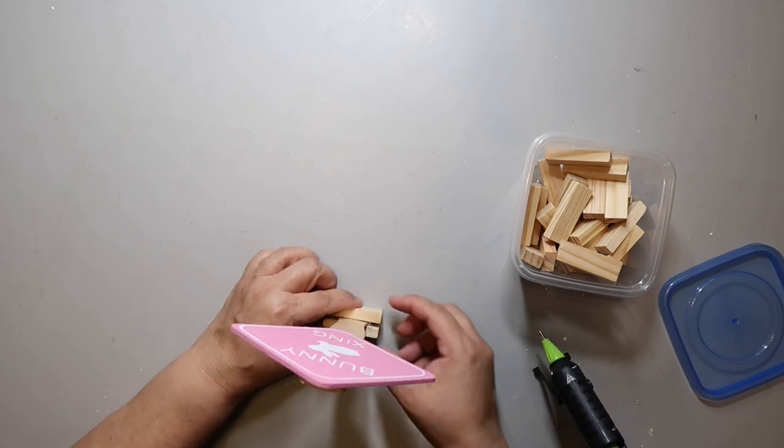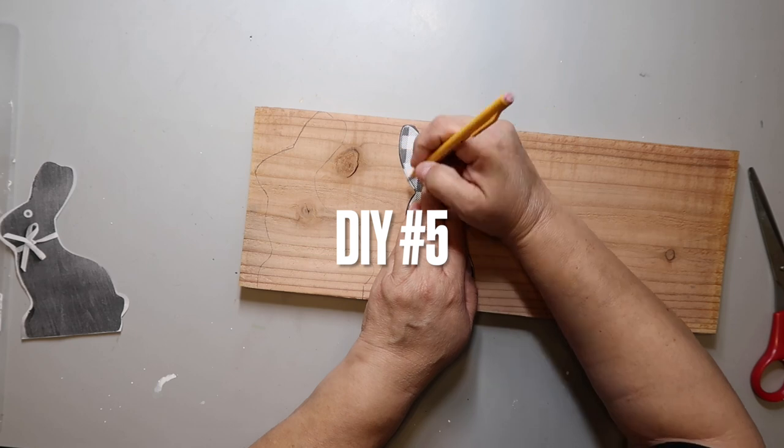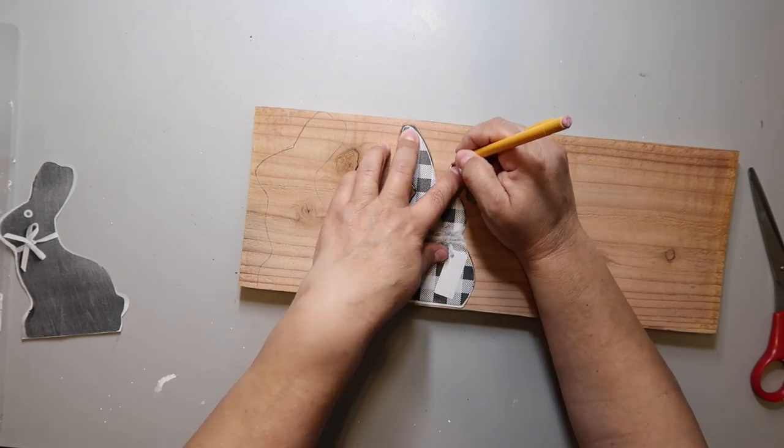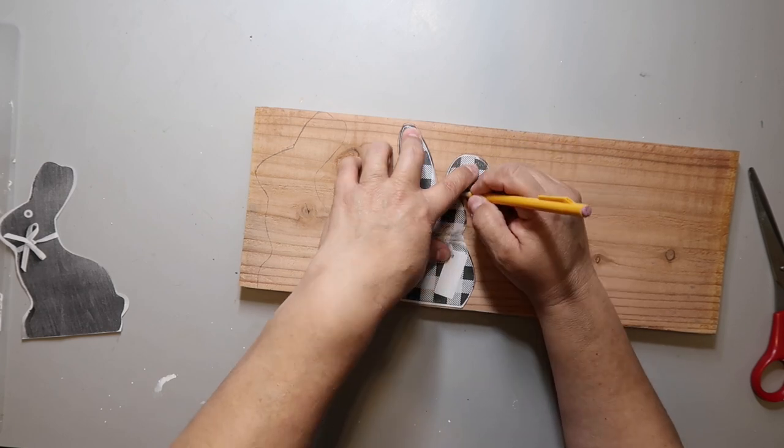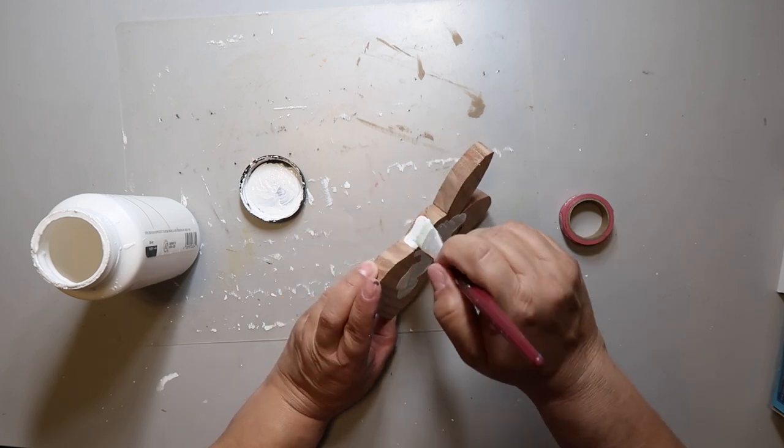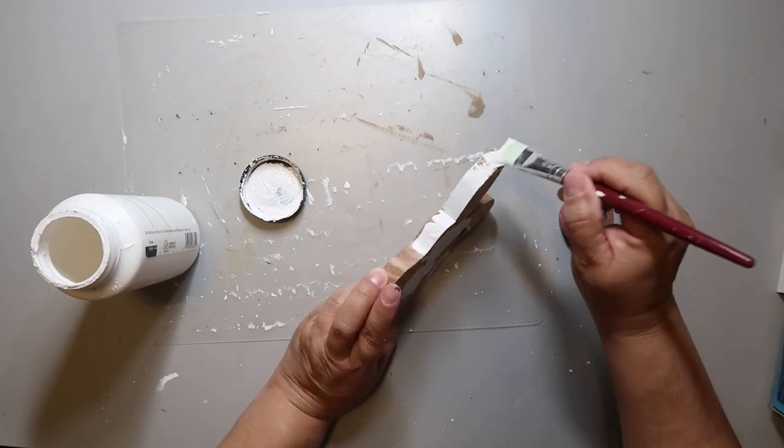This is the last DIY y'all. I'm tracing out another bunny shape onto the scrap piece of fencing material from my stash. Let's just get to the fun part of DIY number five.